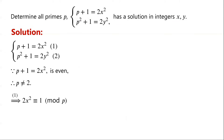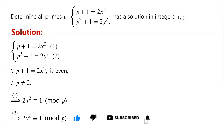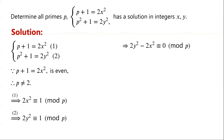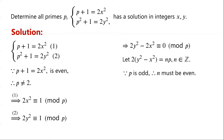From equation 1 we know that 2x squared is congruent to 1 modulo p. From equation 2 we know that 2y squared is congruent to 1 modulo p. So 2y squared minus 2x squared is congruent to 0 modulo p. We let 2 times (y squared minus x squared) equal np, where n is an integer. As the left-hand side is even and p is odd, n must be even.